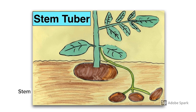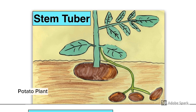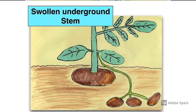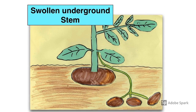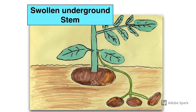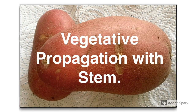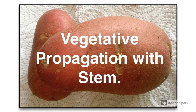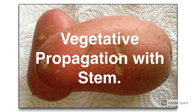Another example of natural vegetative propagation using the stem is the stem tuber. The potato plant produces stem tubers, which are underground stems the tips of which become swollen with food reserves. These swollen underground stems — the potatoes — are the swollen food reserves at the end of these underground stem systems.